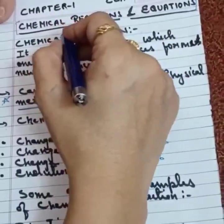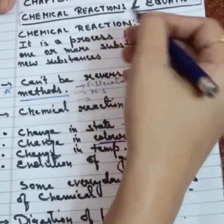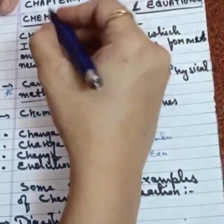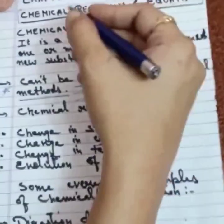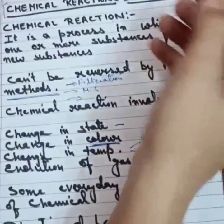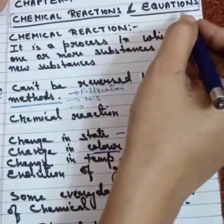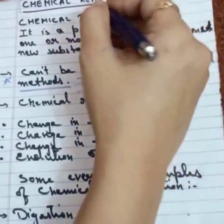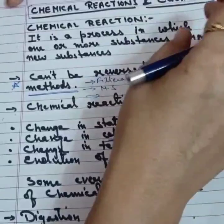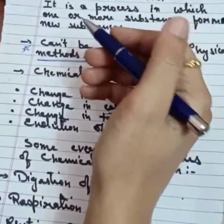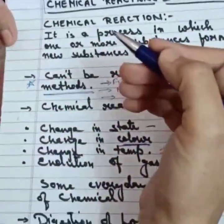Today we are going to begin the first chapter of class 10's chemistry, i.e. chemical reactions and equations. These two terms you must have heard in class 9 also, but this year we will be dealing with these two terms in detail because both are extremely important in chemistry. Unless you have understood these two terms in detail, you won't be able to understand the rest of the chapters properly. Therefore I would request each one of you to pay attention to each and every concept of this chapter.